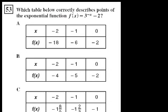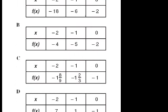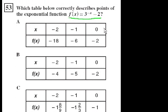We're on problem 53. Which table below correctly describes the points of the exponential function f of x equals 3 to the minus x minus 2? And they all input the same x values, as far as I can tell. So let's just figure out which choice works.